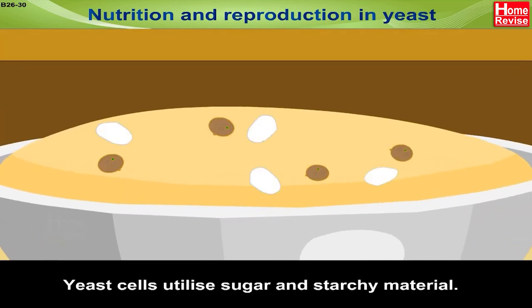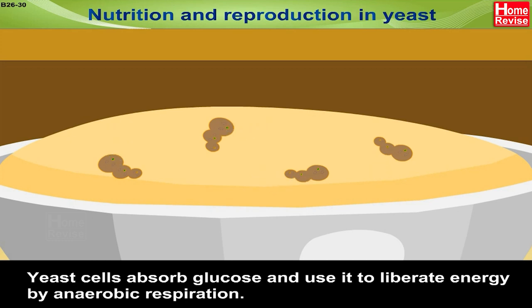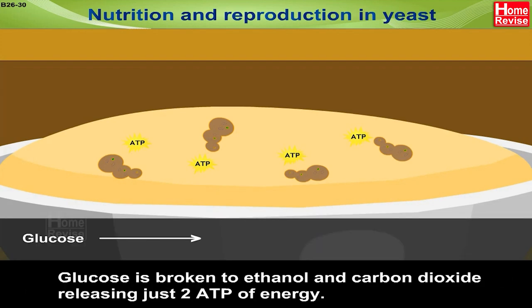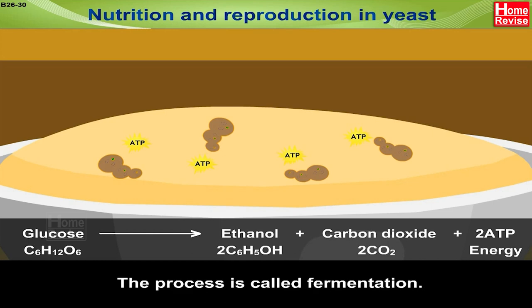Yeast cells utilize sugar and starchy material. They secrete enzymes to break down these compounds into glucose. Yeast cells absorb glucose and use it to liberate energy by anaerobic respiration. Glucose is broken down to ethanol and carbon dioxide, releasing just two ATP of energy. The equation is: C6H12O6 (glucose) → 2 C2H5OH (ethanol) + 2 CO2 + 2 ATP energy. This process is called fermentation.